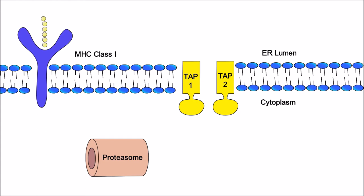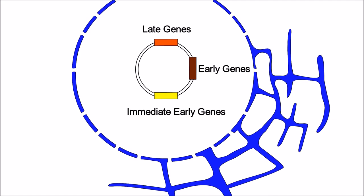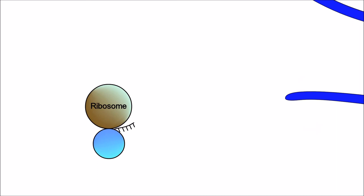ICP47 blocks peptide transport through TAP1, TAP2 channel and thereby preventing immune system recognition. Now we look at the third and final immediate early gene. This gene is transcribed and then translated into ICP4 protein. This protein activates early genes and late genes.